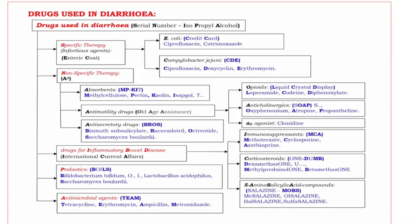Diarrhea is a condition of having at least three watery stools each day caused by infectious agents. When we come to the classification, the mnemonic of anti-diarrheal drugs is S-N-I-P-A: S means Specific Therapy, N means Non-Specific Therapy, I means Drugs for Inflammatory Bowel Disease, P means Probiotics, A means Antimicrobial Agents.